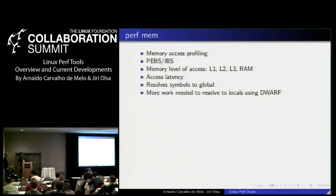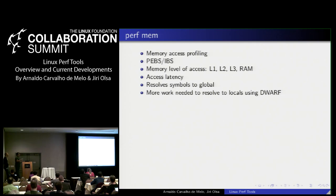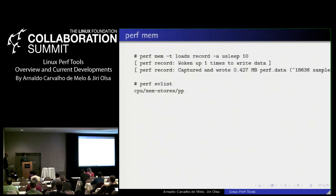perf mem also shows what data address was being accessed and in which DSO and memory area. The idea is that you can resolve things like: an access to this variable caused this memory access, and it was served by level-one cache, level-two cache, or had to go all the way to main memory. Currently this works for global variables, but more work is needed for local variables using DWARF debug information to map what is where at that moment in time.